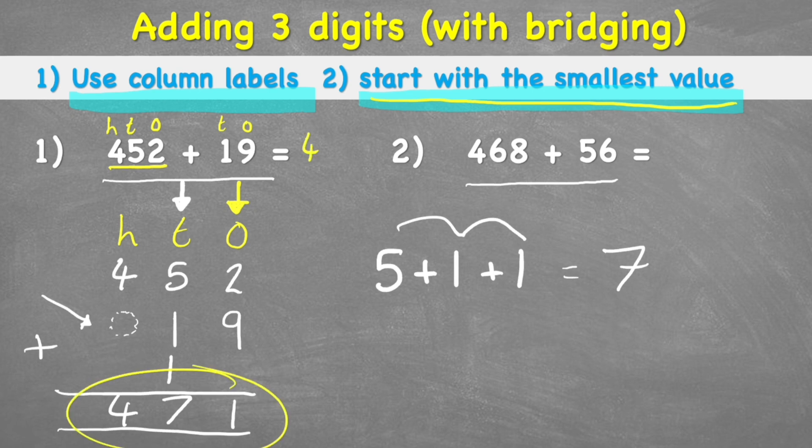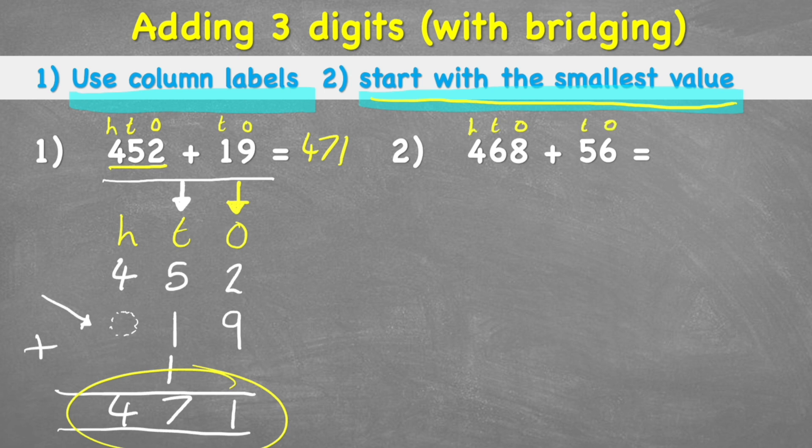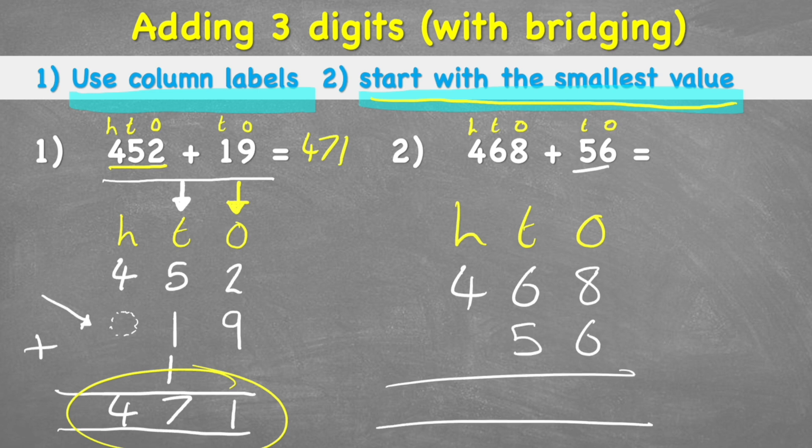Let's have a look at question two. Again, start by putting our ones, tens, hundreds, and then ones and tens. This is really good practice to get used to because then I put my ones, tens, and hundreds in my columns. I can see that I have eight ones, six tens, and four hundreds. In my 56, six ones and five tens. Put my equal sign and my addition, and I'm ready to go.